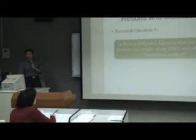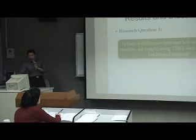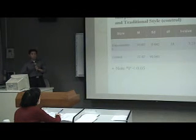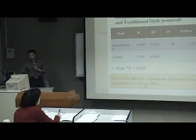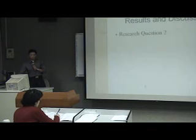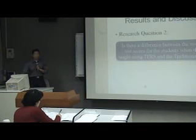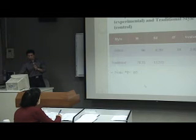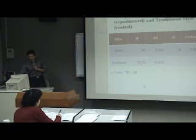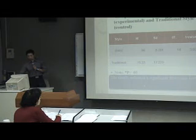The results addressed two research questions. The first asked whether there are differences between test scores of students taught using TPRS versus traditional methods. The answer is yes — the P-value is less than 0.05, showing a significant difference. The second question examined differences in vocabulary test scores specifically, and the answer is also the same: the P-value is 0.05, indicating a significant difference between the groups.